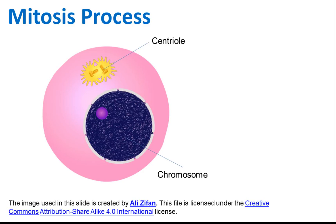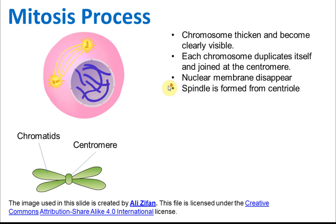At the beginning of mitosis, the chromosomes thicken and become clearly visible. If we view them under a microscope, we will find that the chromosomes become thicker. Inside each chromosome, we have a structure called the centromere, and structures called the chromatids. During mitosis, each chromosome duplicates itself and joins at the centromere.